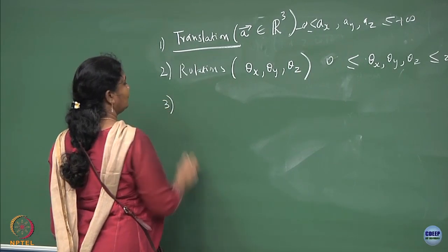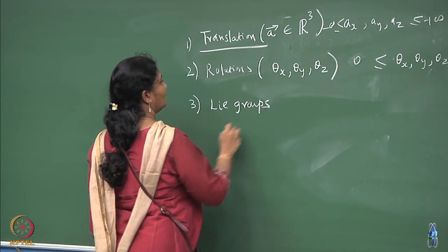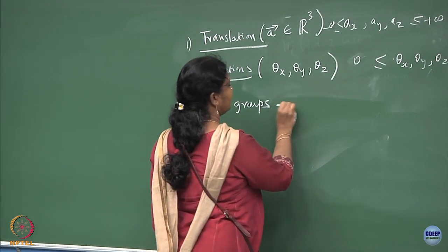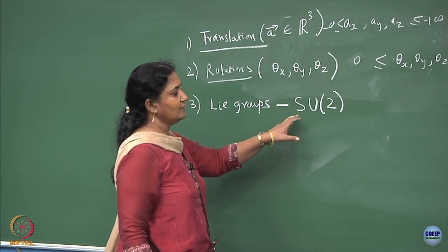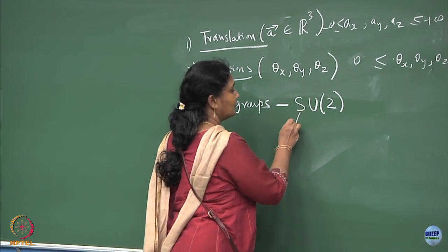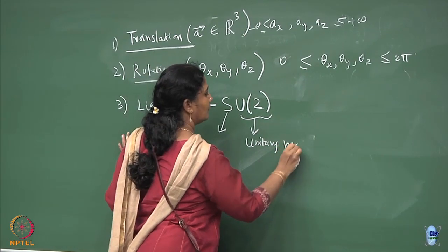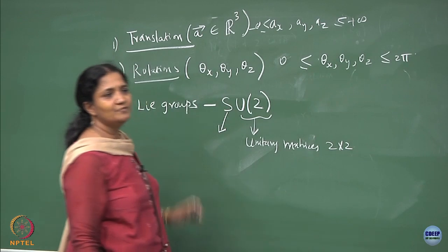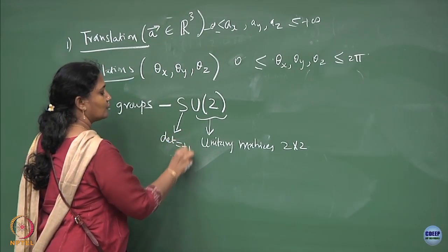Then I will slowly introduce Lie groups. First a warm-up to clarify the notation. The 'S' in SU denotes that you write matrices with determinant plus 1, and 'U' denotes unitary matrices. So SU(2) denotes 2×2 unitary matrices with determinant +1; the lowest non-trivial dimension is 2×2.